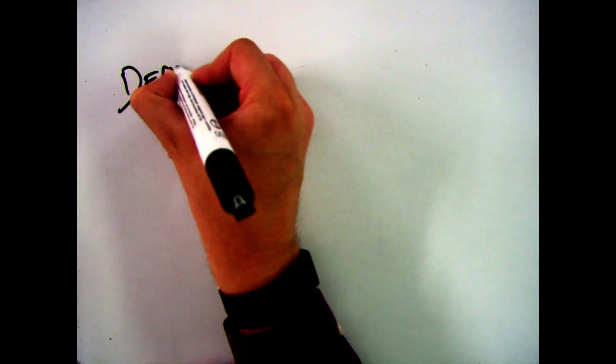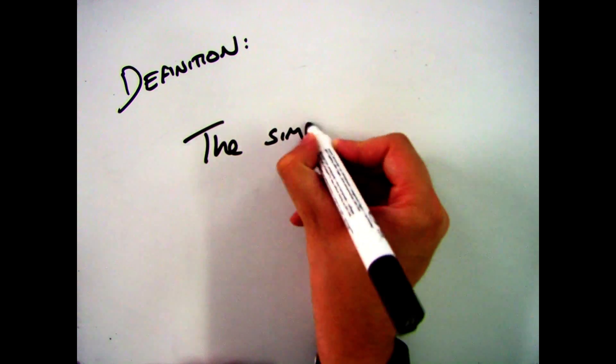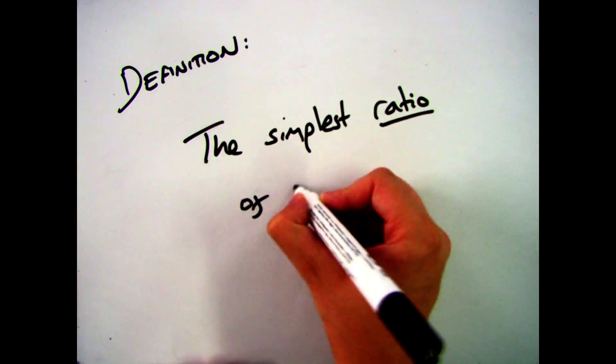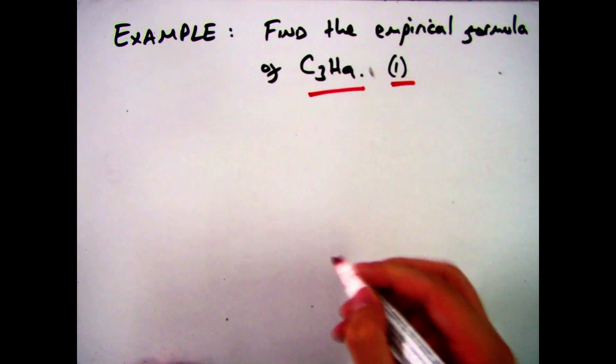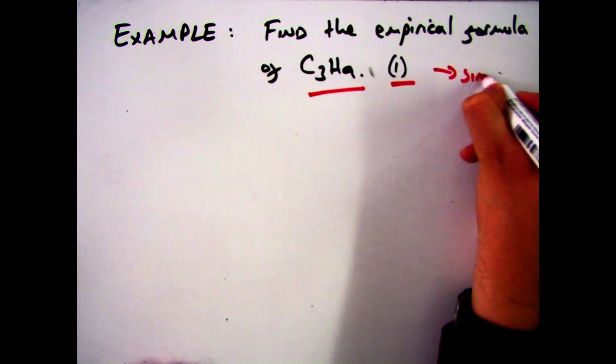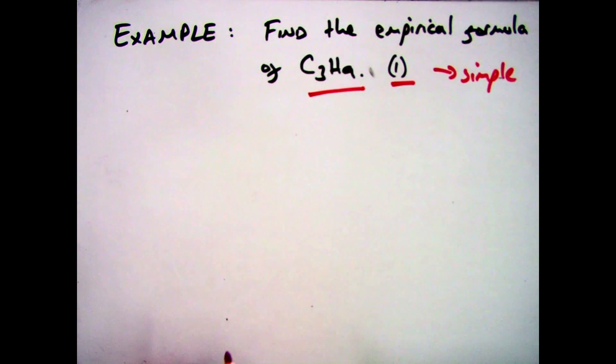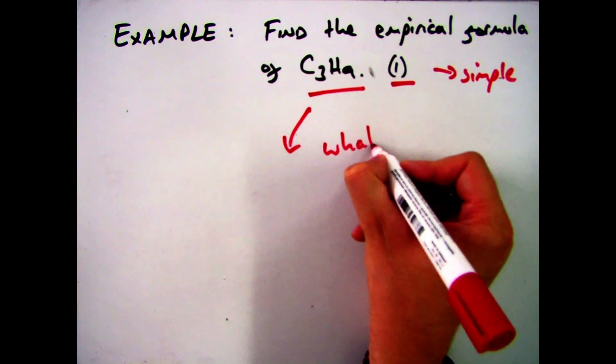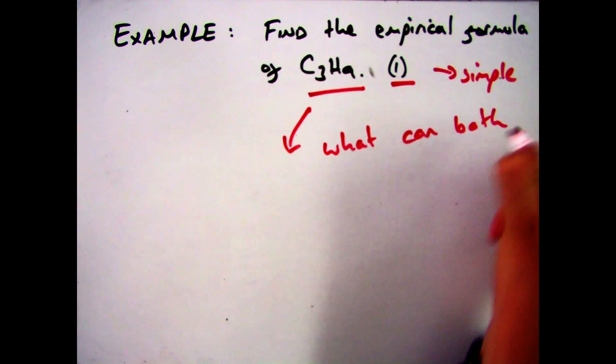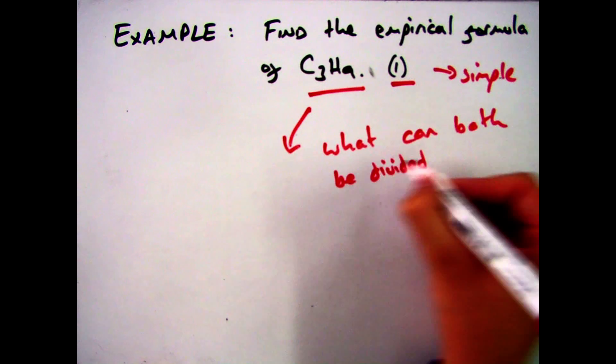Now in a previous video we'd already talked about the fact that the empirical formula is the simplest ratio of the atoms in that molecule. So if you're given a question that says find the empirical formula of C3H9 and it's only worth one mark, it's a simple question. You don't have to do any high level calculations with it. All you need to do is figure out the largest number that both of them can be divided by that gives you a whole number for each.